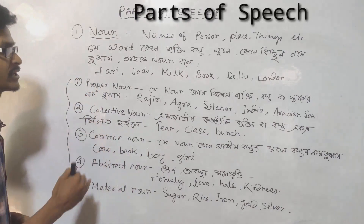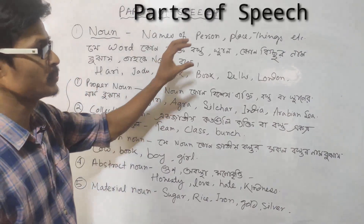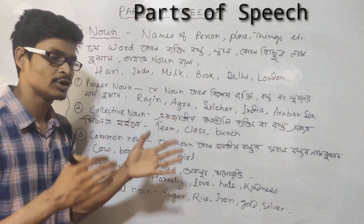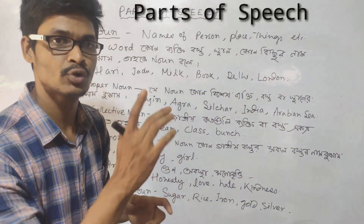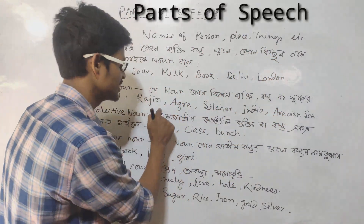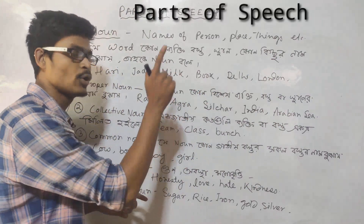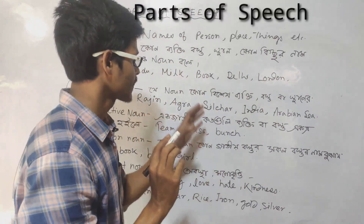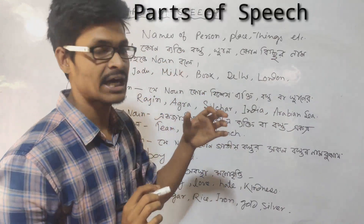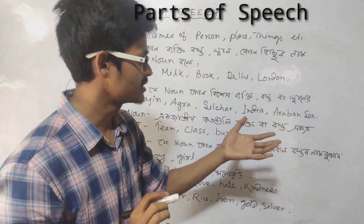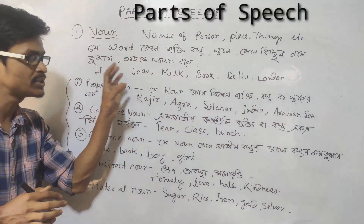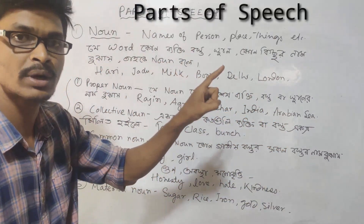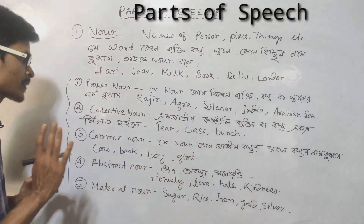Proper Noun: a noun that is the name of a specific person, object, or place. For example, a specific person — Rajin; a specific place — Agra; a specific thing. Examples: India, Arabian Sea. Any word that refers to a specific, particular person or place is a Proper Noun.